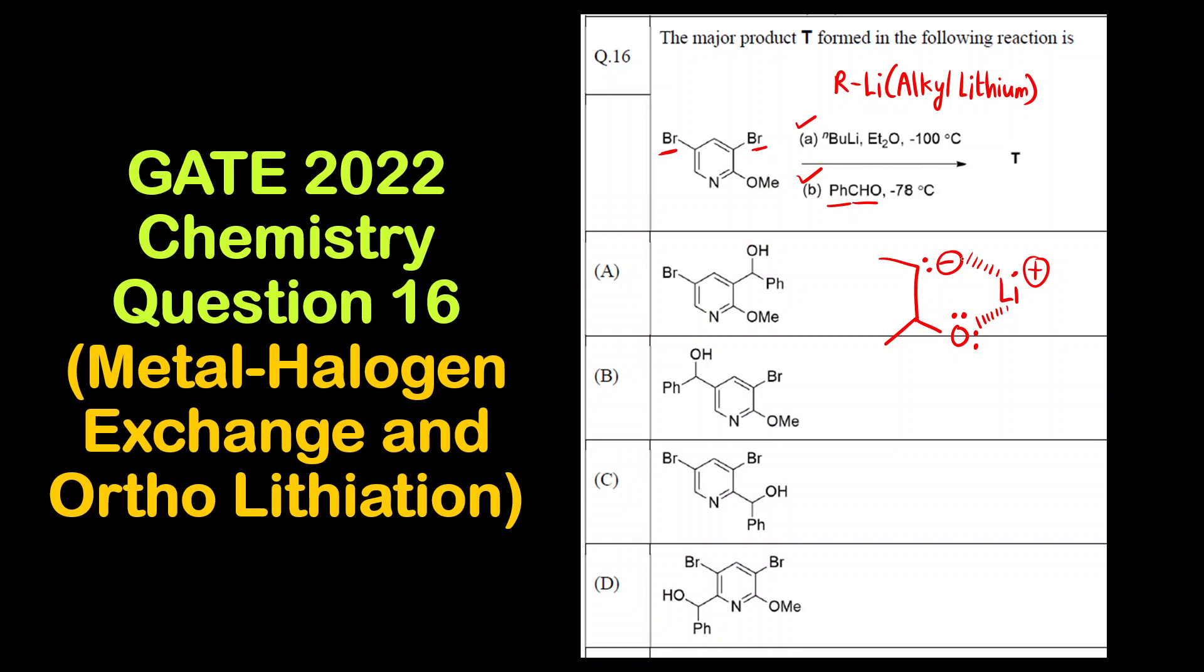So the criteria is: the carbon that is attached to Br, just ortho to that there should be a group that has a lone pair. Here you can see that group is O-methyl, the methoxy group, which is ortho to this bromine. So this bromine atom will react, this bromine will not react. Now let us see how the reaction takes place.